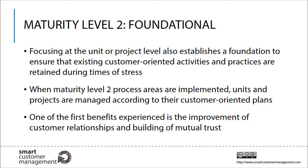When maturity level 2 process areas are implemented, units and projects are managed according to their customer oriented plans. One of the first benefits organizations experience when they start implementing customer oriented process areas, guided by the smart customer management model, is the improvement of customer relationships and building of mutual trust. Therefore, when customers begin to see the organization is able to deliver more customer oriented products and services and care for their individual interests, their motivation to stay with the organization increases.